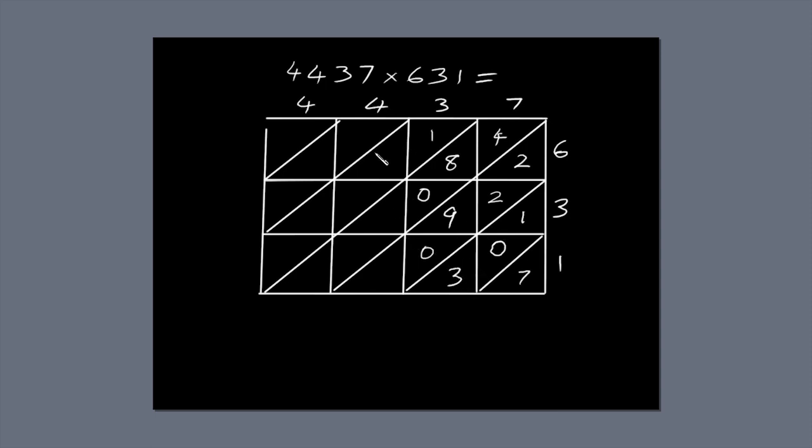On to the next column. 4 times 6 is 24. 4 times 3 is 12. 4 times 1 is 4.